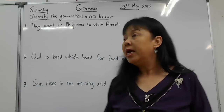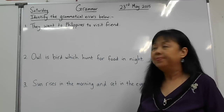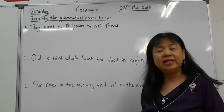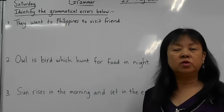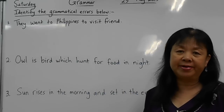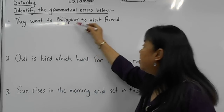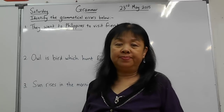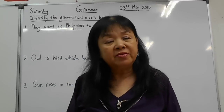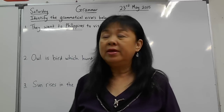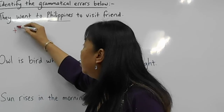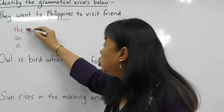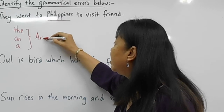Look at the first sentence here: 'They went to Philippines to visit Frank.' This sentence is grammatically wrong. How do we identify the error? For all countries in Southeast Asia, including many parts of the world, we do not use 'the.' The word 'the,' 'a,' and 'an' fall under the category of articles.